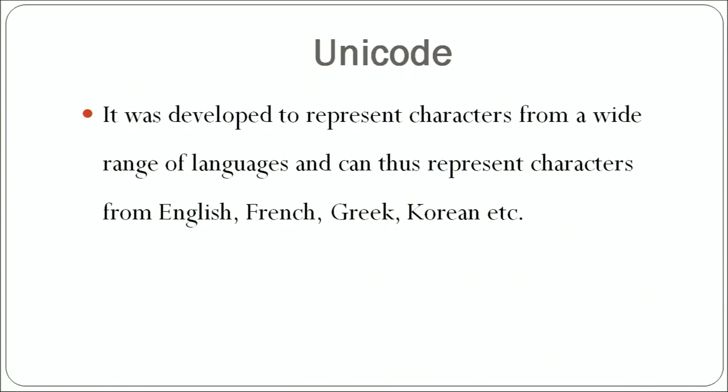Then we have the Unicode character set. It was developed to represent characters from a wide range of languages and it can represent characters from English, French, Greek, Korean, and so on. It takes the ASCII codes and adds other codes as well, using numbers after 122 and after 500, 700 also, to have a unique particular code for the other characters and symbols used in all these different languages. Unicode is commonly used by all the countries and all the systems. That is why it is called Unicode — these are the common codes for everybody and the numbers keep on growing.